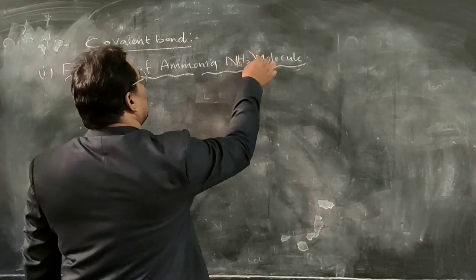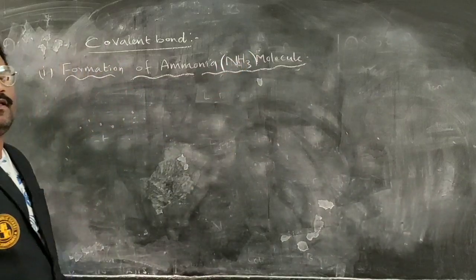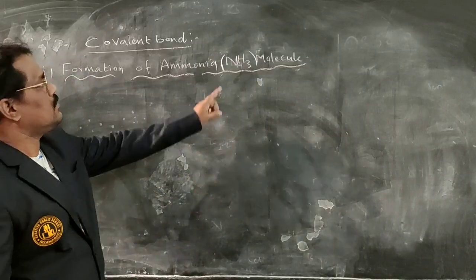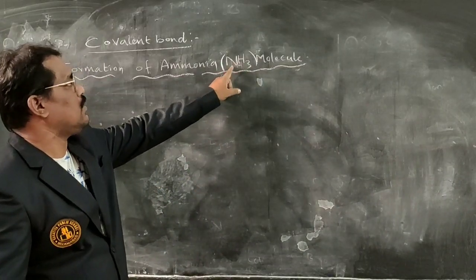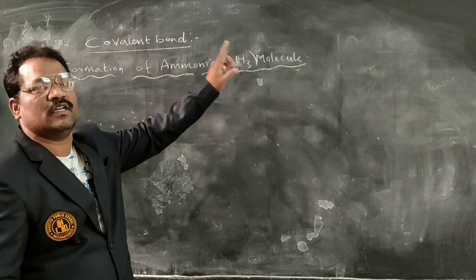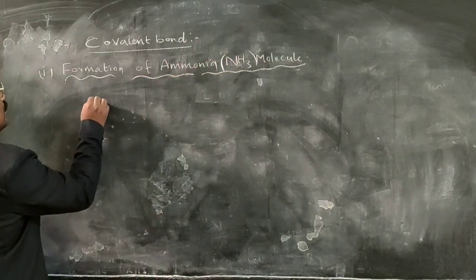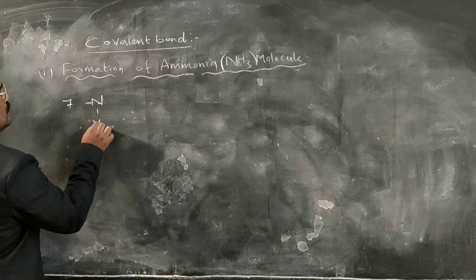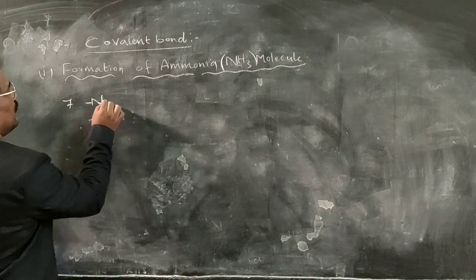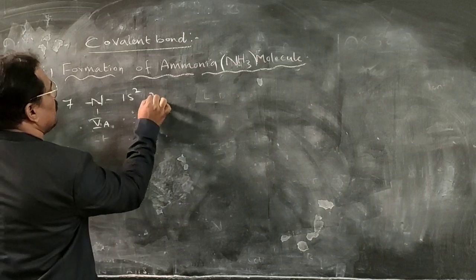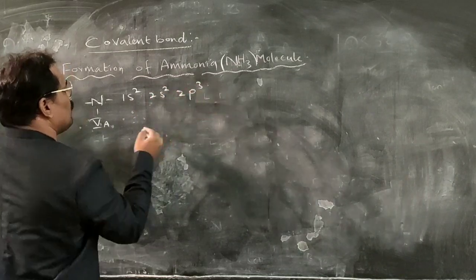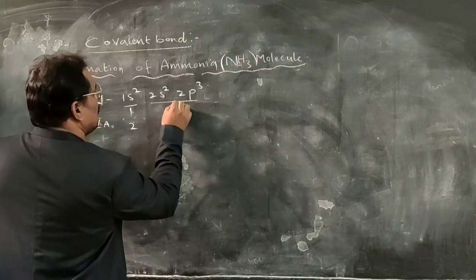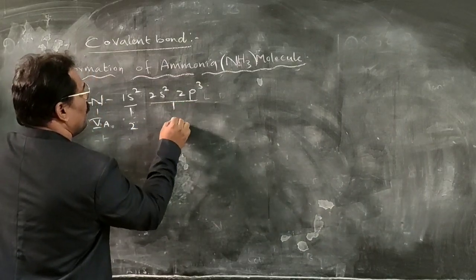Formation of the ammonia molecule. The ammonia molecule formula is NH3. Here also two dissimilar elements are involved: nitrogen is one element and hydrogen is another. For nitrogen, whose atomic number is 7, belonging to the 5th A group element, the electronic configuration is 1s2, 2s2, 2p3. The first shell has 2 electrons and the second shell has 5 electrons.